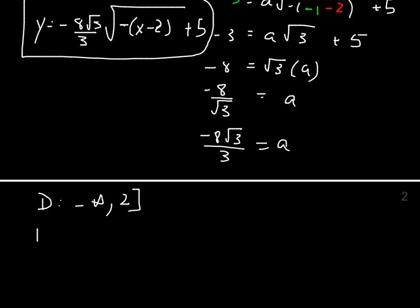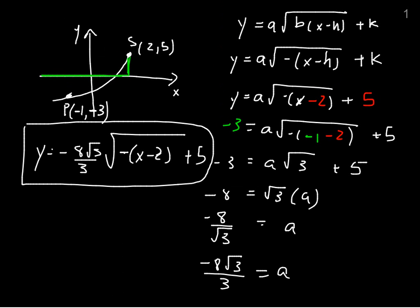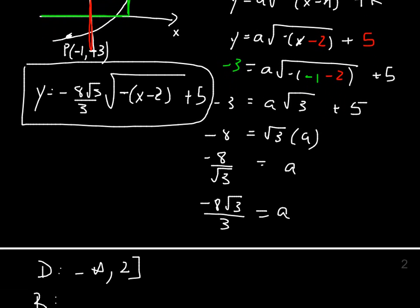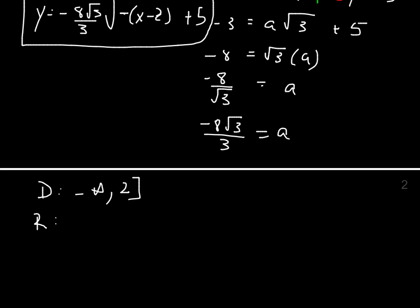And the range is going to be based on my starting point. It's going down. So it goes down all the way to negative infinity, and it stops at 5. So it's from negative infinity all the way to 5 included. So that's my range.